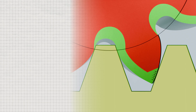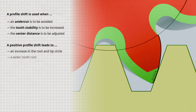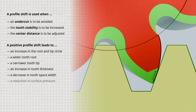Finally, let's summarize the most important statements. A profile shift is used when an undercut is to be avoided, tooth stability is to be increased, or the center distance is to be adjusted. A positive profile shift leads to an increase in the root and tip circle, a wider tooth root, and a narrower tooth tip. The tooth thickness on the reference pitch circle increases and the tooth space width decreases accordingly. The surface pressure is reduced by the part of the involute tooth profile that is further out. Both the base circle diameter and the reference pitch circle diameter do not change with a profile shift. With a negative profile shift, the effects mentioned are exactly the opposite. Due to the many positive effects, a positive profile shift is generally recommended.